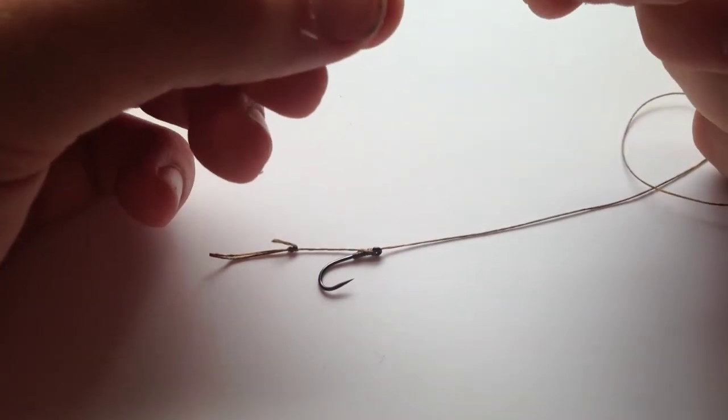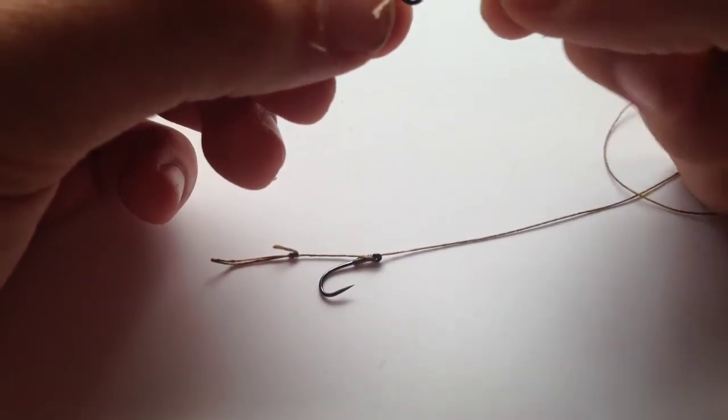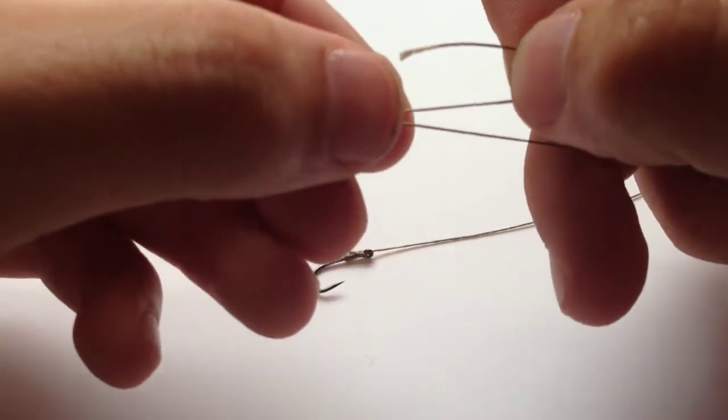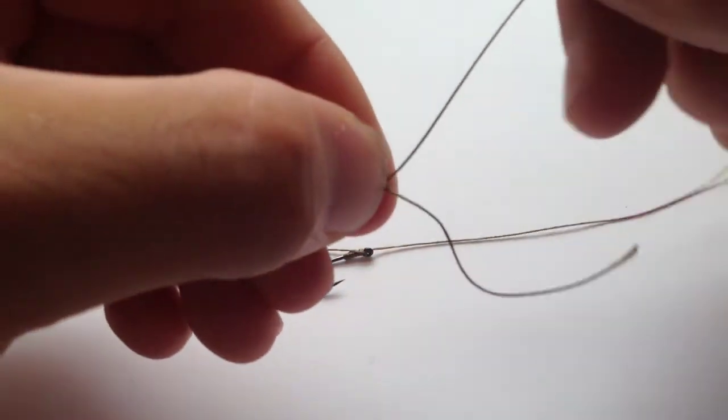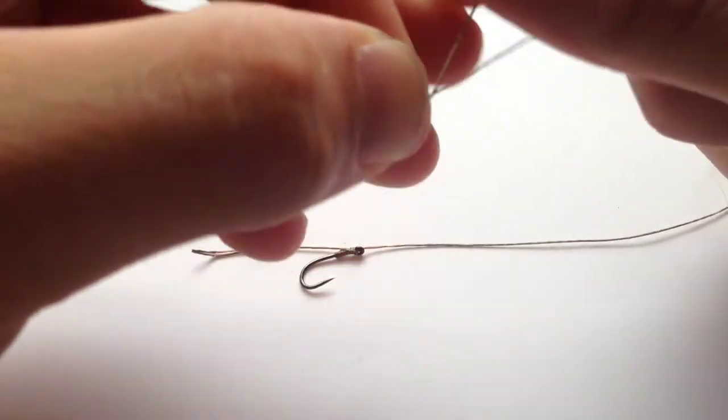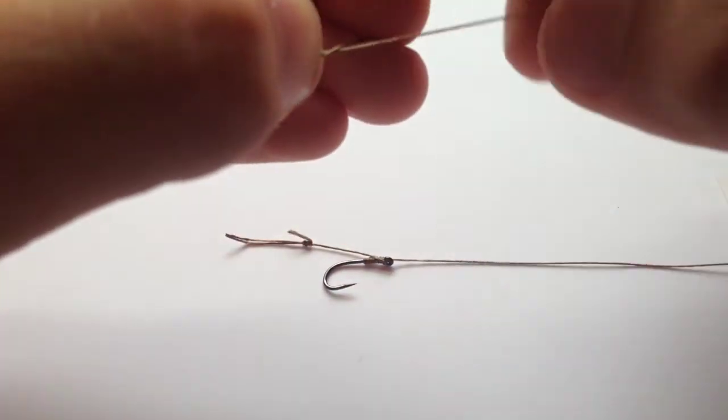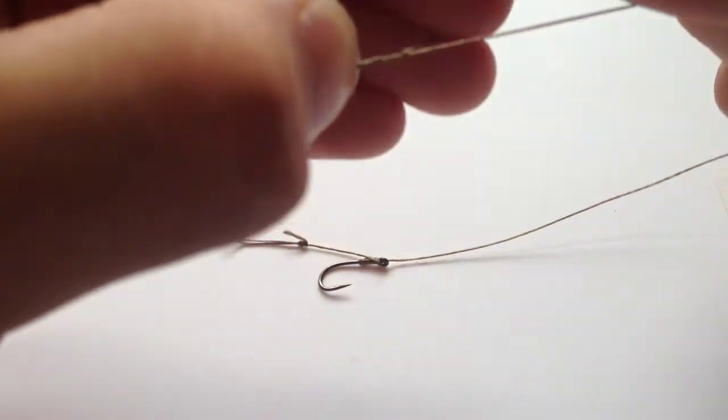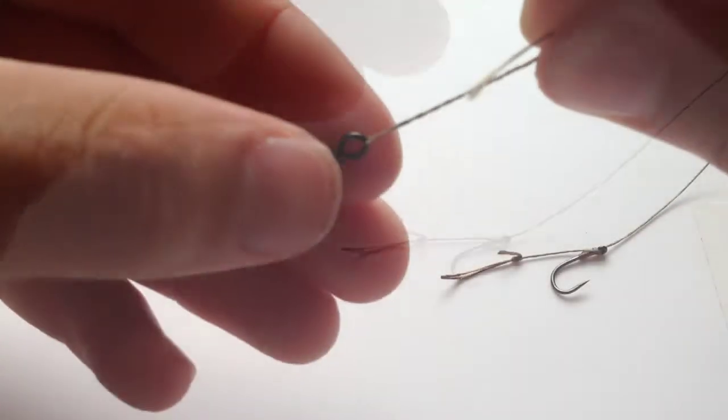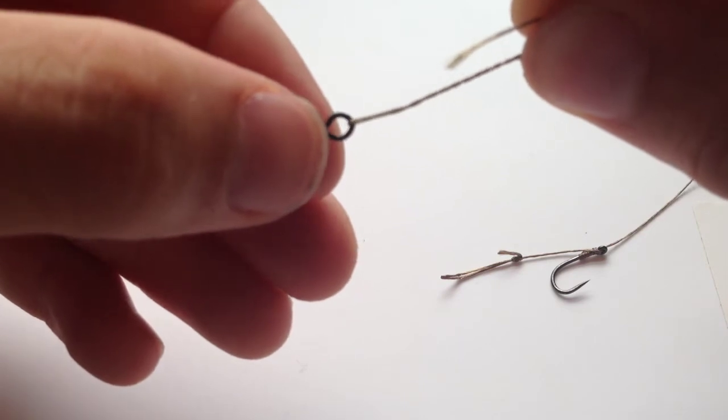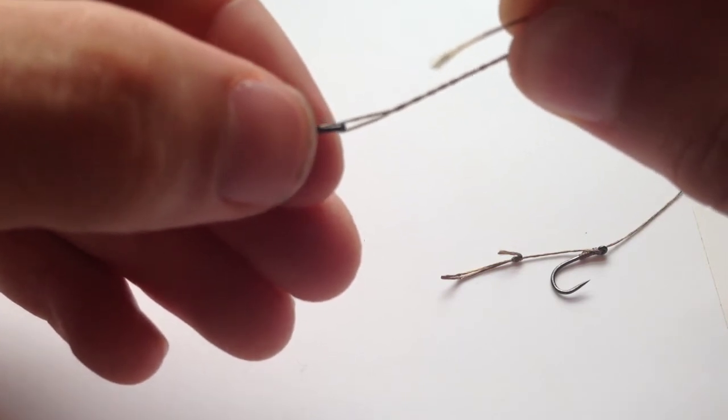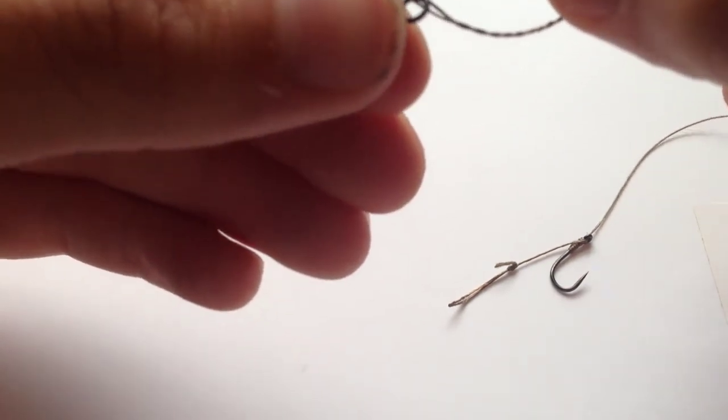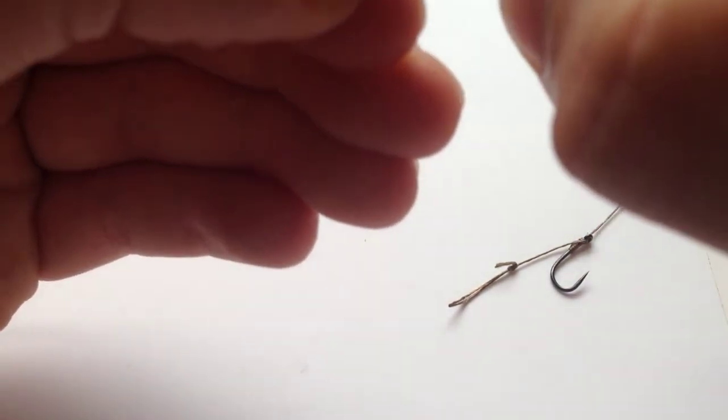I'm going to tie it with a simple blood knot. As you can see, the braid hook link material has passed through the eye of the swivel. Make a first loop. I tend to do seven turns on the blood knot for good luck, and just spin it around. As you can see, we've got seven turns on the knot here. Now pass this tag end back through the first loop that you made.